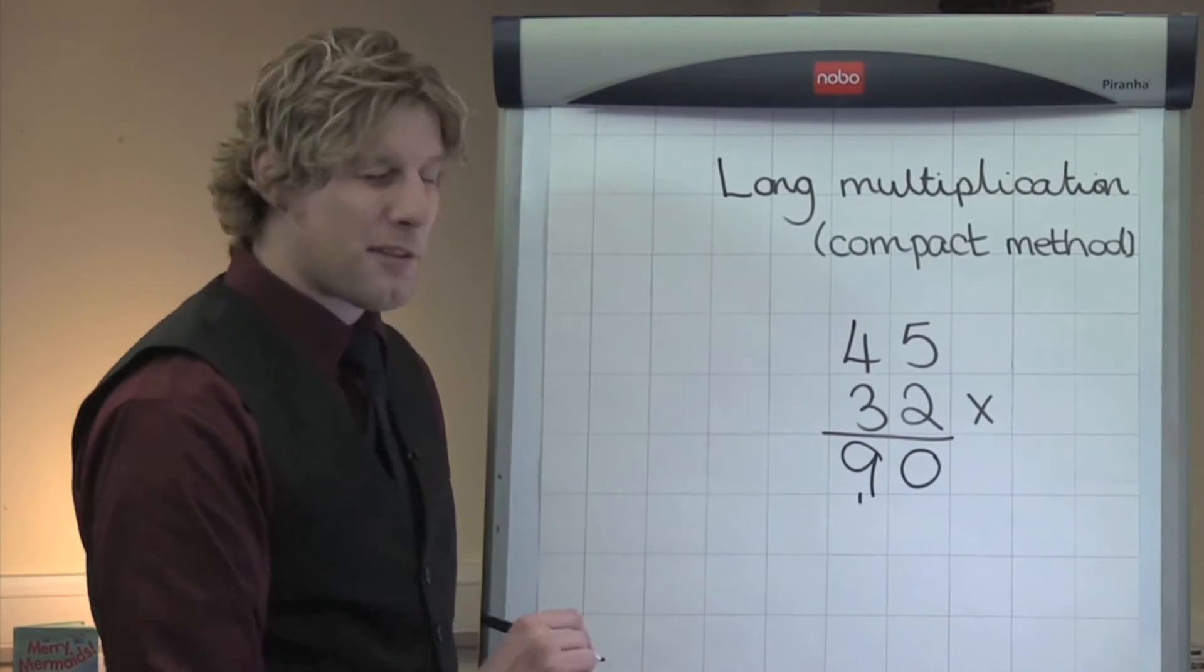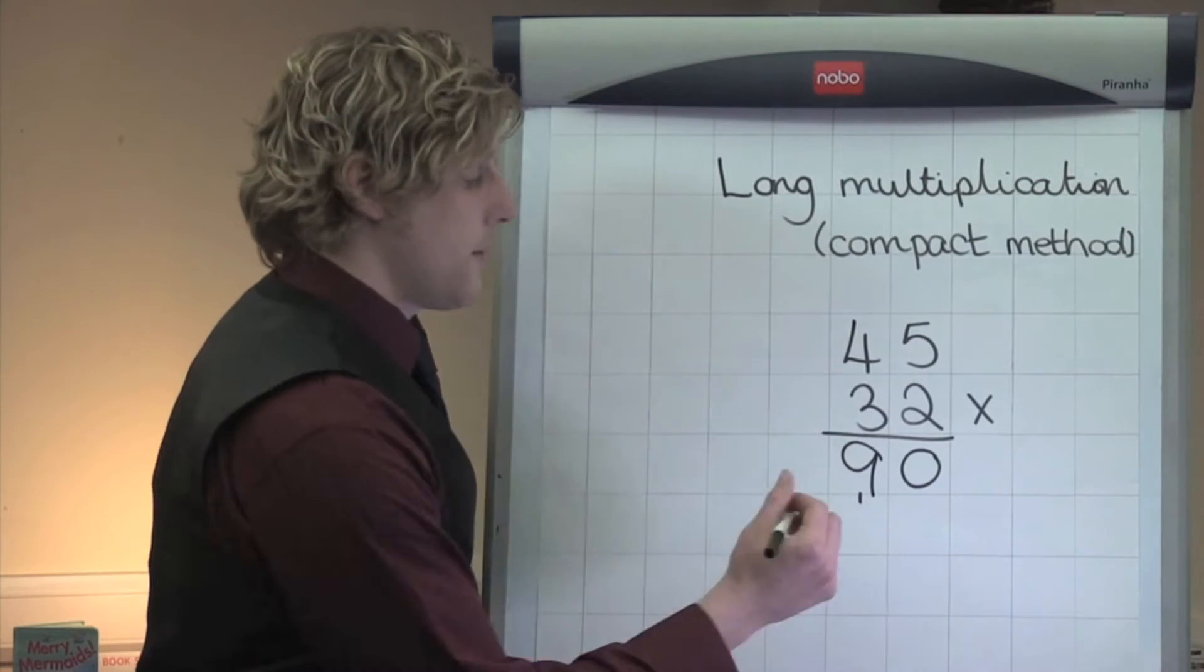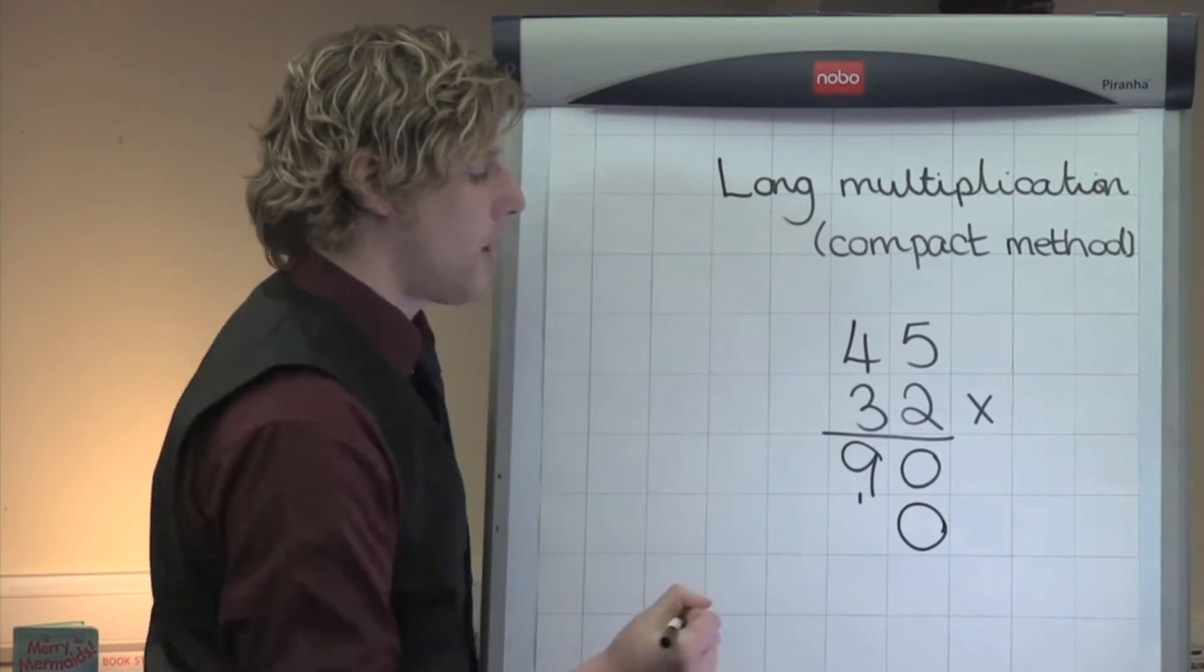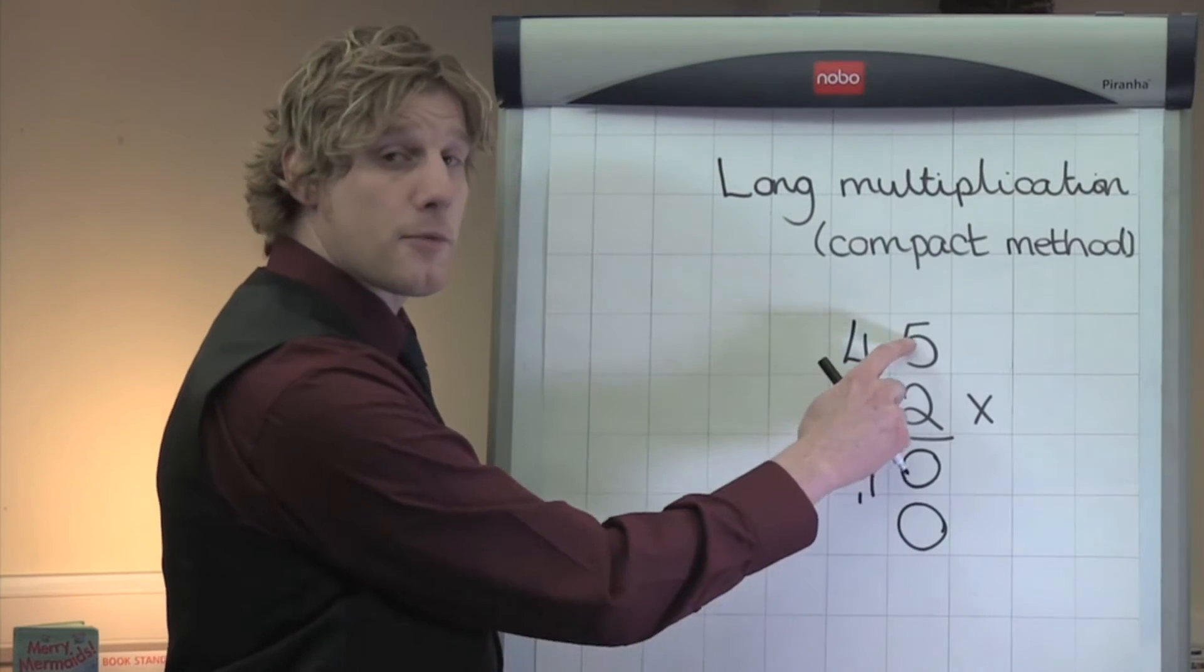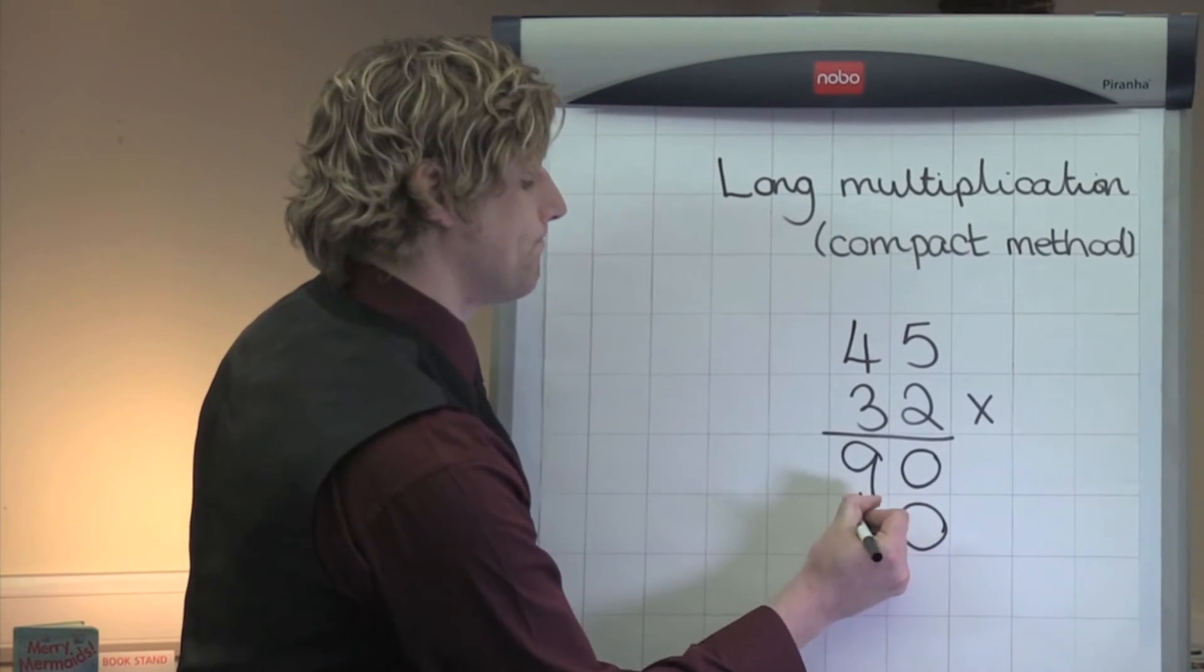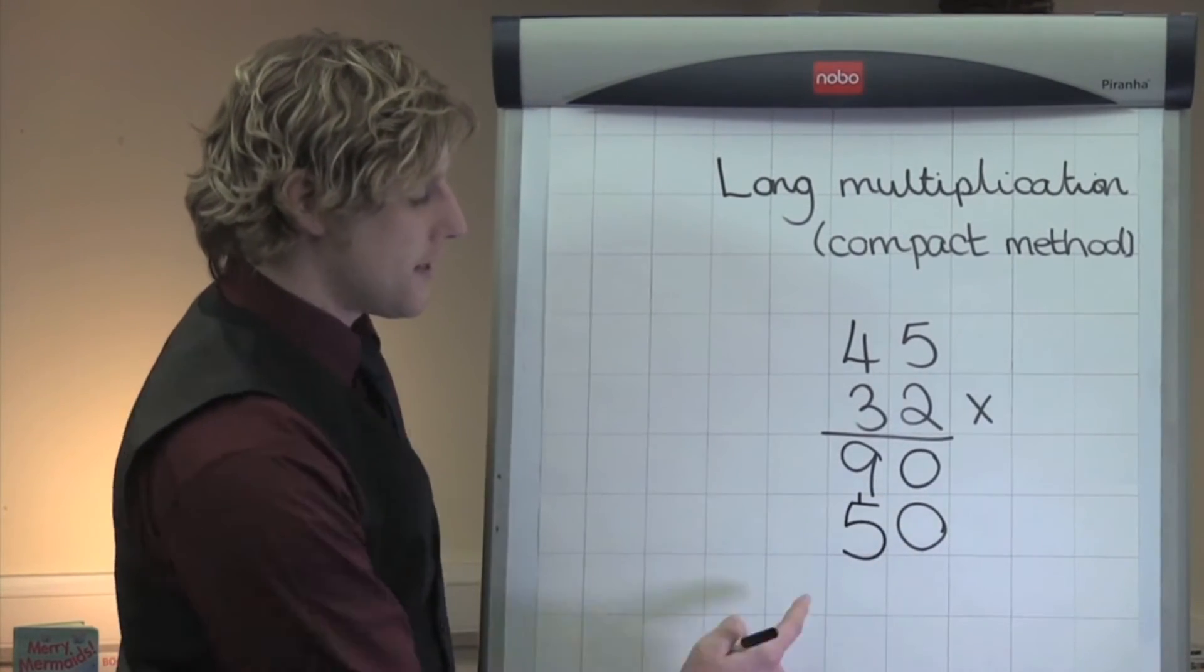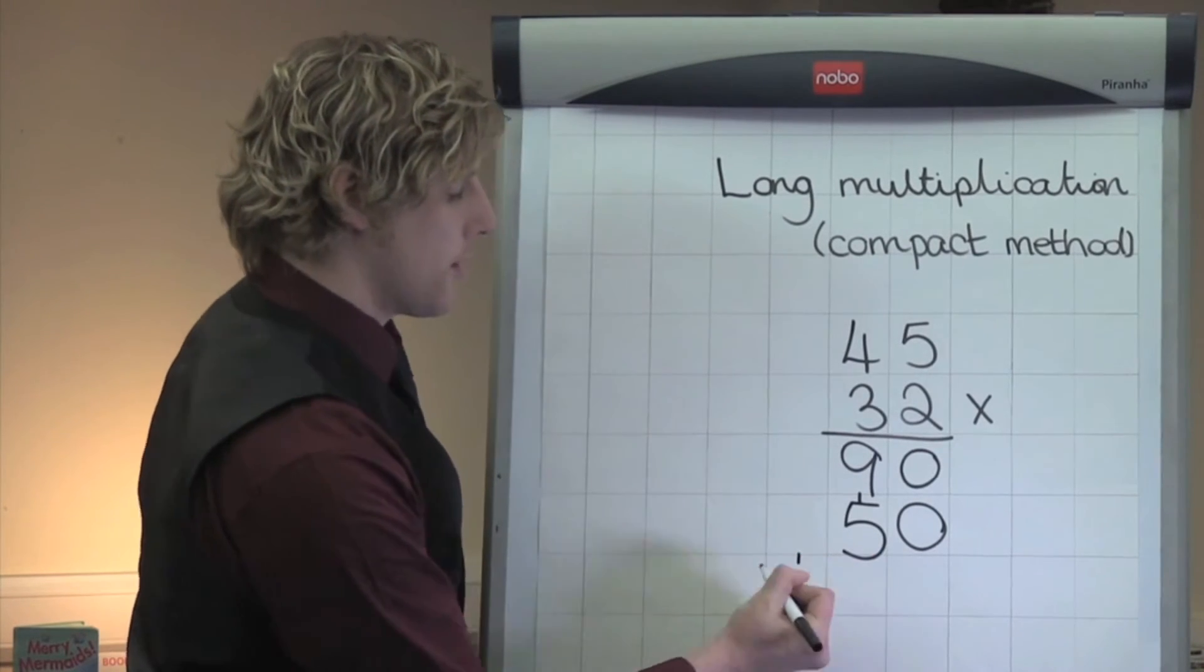I now look at this 3. That 3 actually means 30. So, to hold my place value, I add a 0 into the units column and then I can treat this as 3 times 5, which is 15. I write my 5 into the tens column and carry my 1 across.